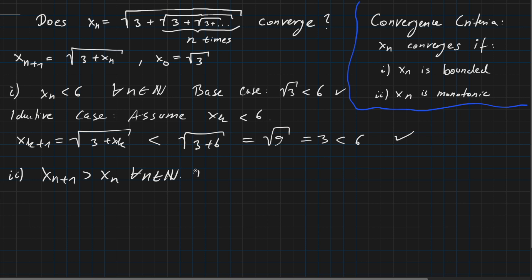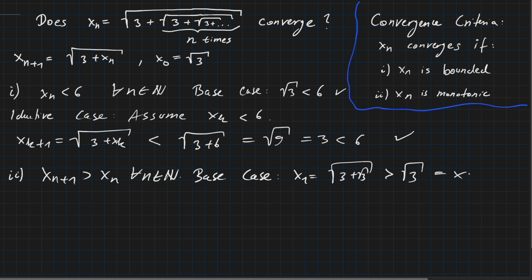The base case: x_1 = √(3 + √3), which is indeed bigger than √3 = x_0, because we are adding a positive number inside the root and the square root function is strictly monotonically increasing. So x_1 > x_0 and the base case is done.